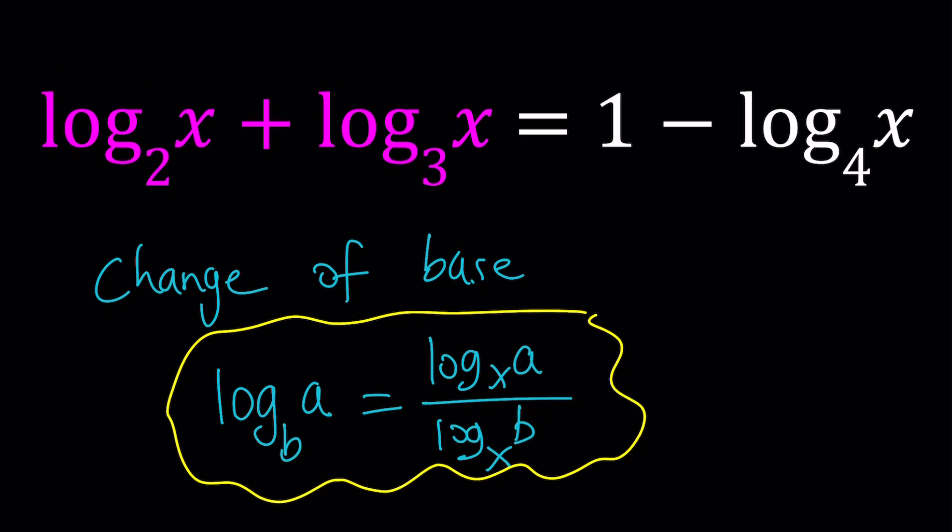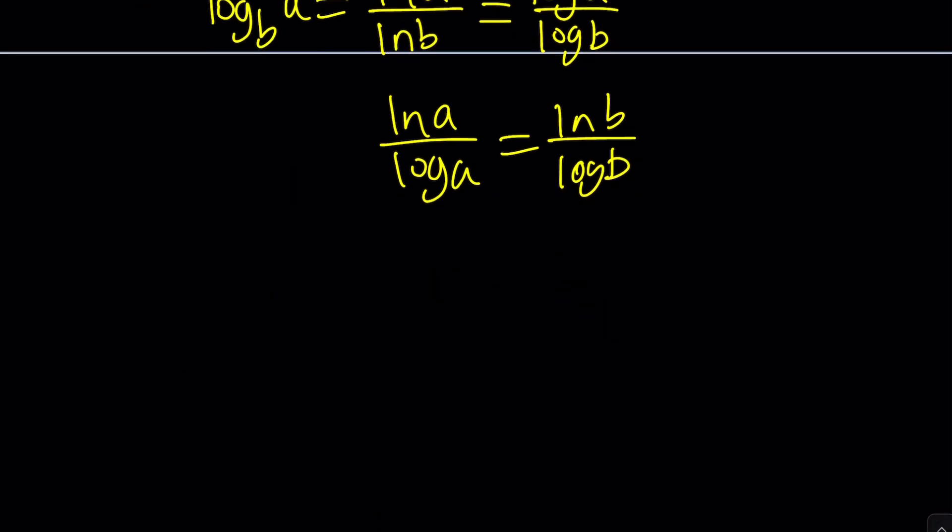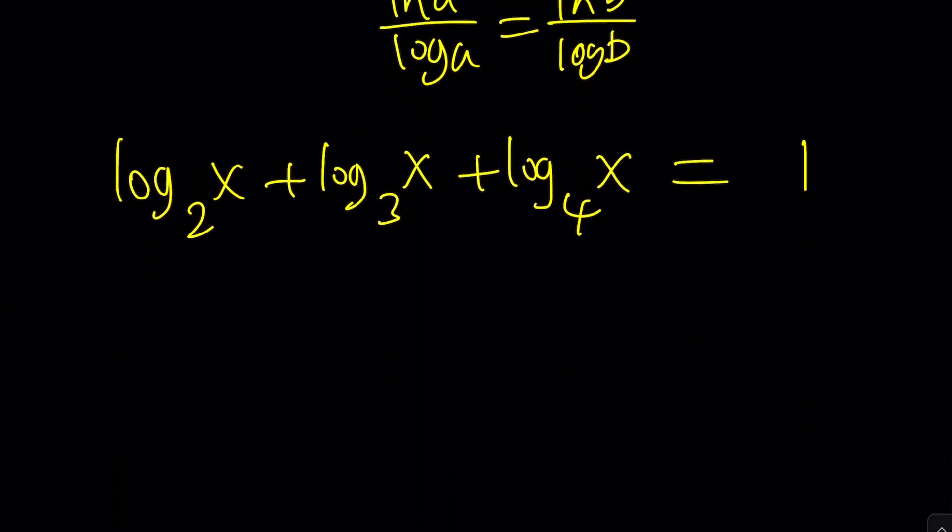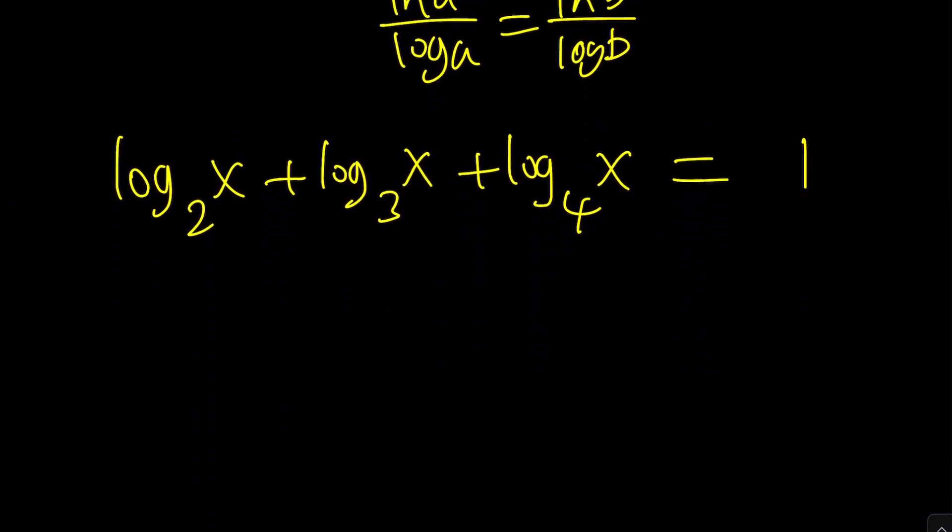First of all, I want to put all the variables on the same side. So let's go ahead and add the log x with base 4 to both sides, and then the sum is going to equal 1. So this is better, right? Now every x is on the left-hand side, and I'm going to use change of base.